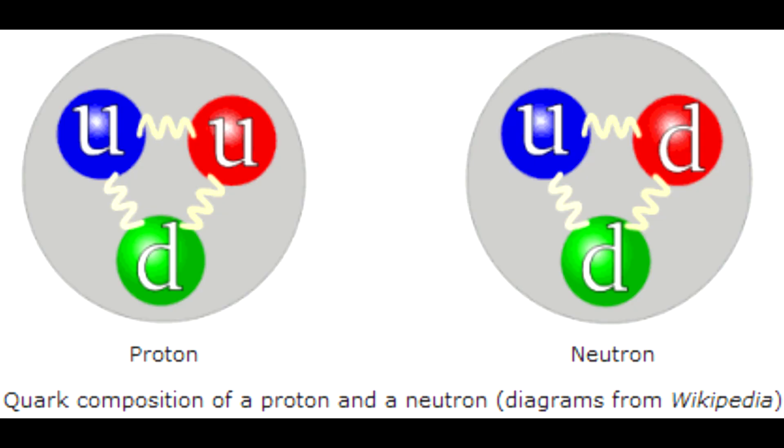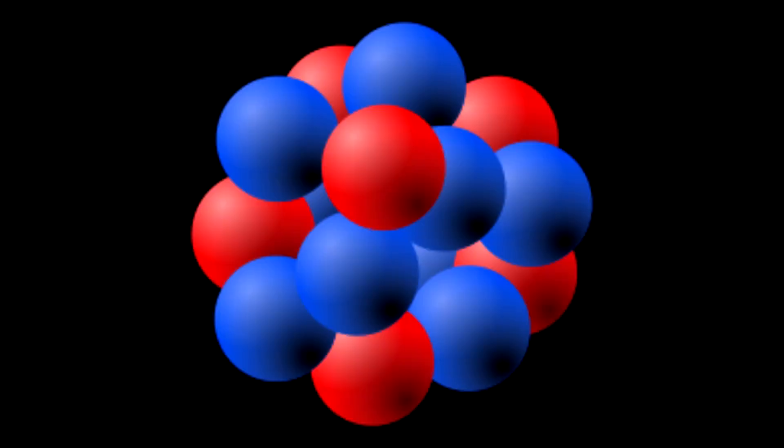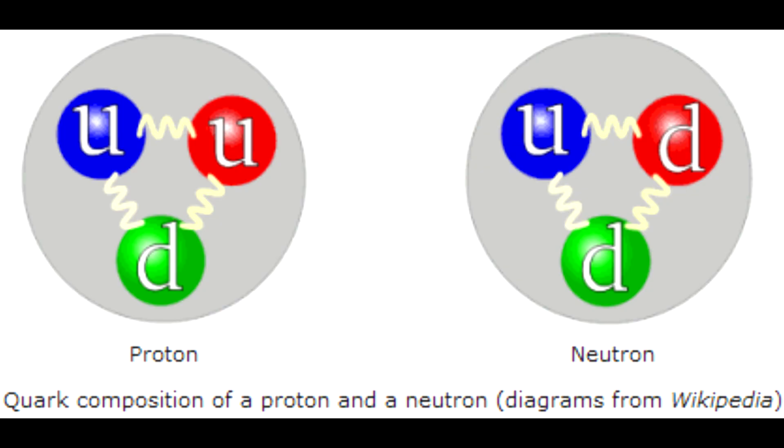In addition, the strong force binds neutrons and protons together to create atomic nuclei. Most of the mass of a common proton or neutron is the result of a force field energy. The individual quarks provide only about 1% of the mass of the proton. How does this work?